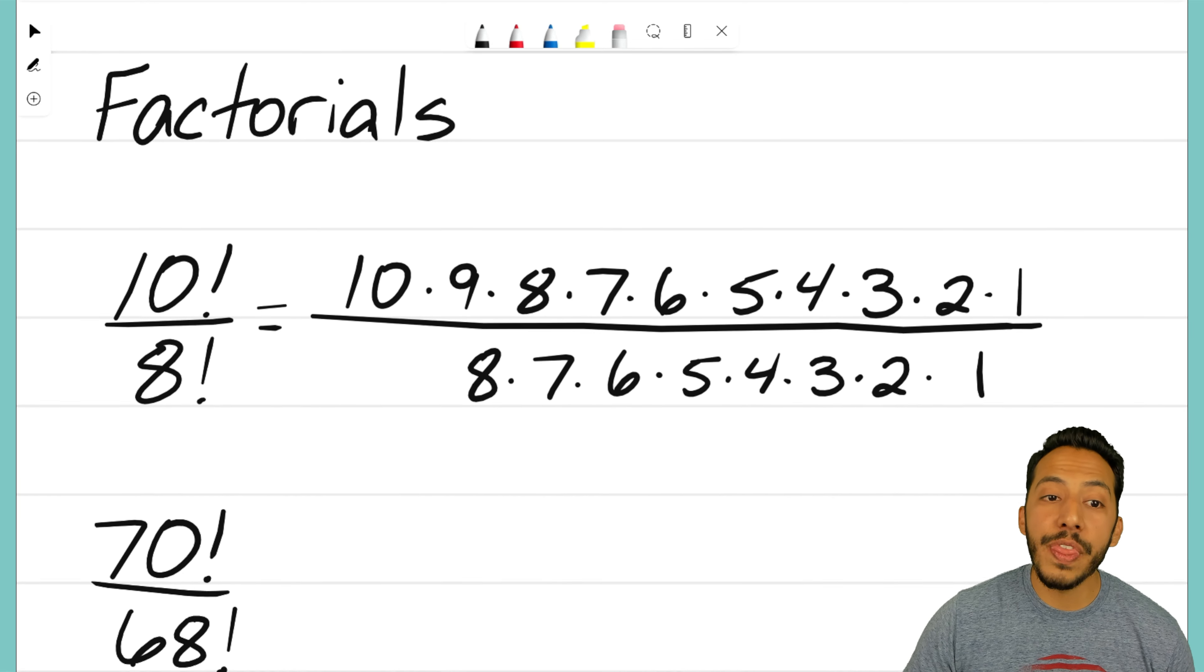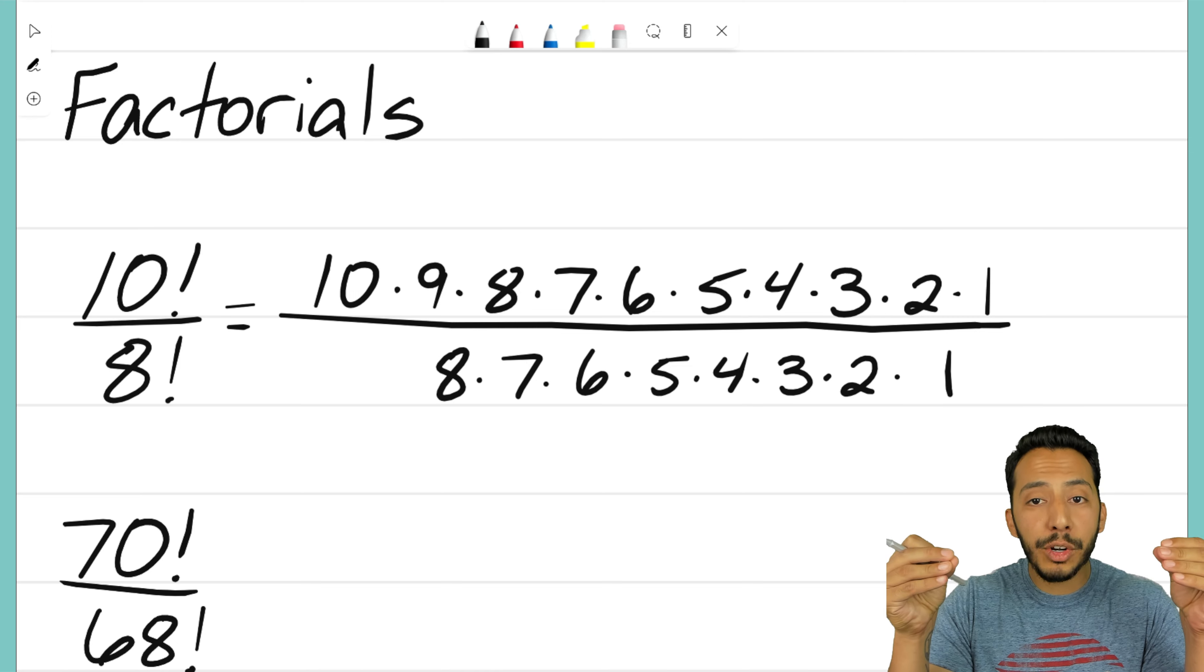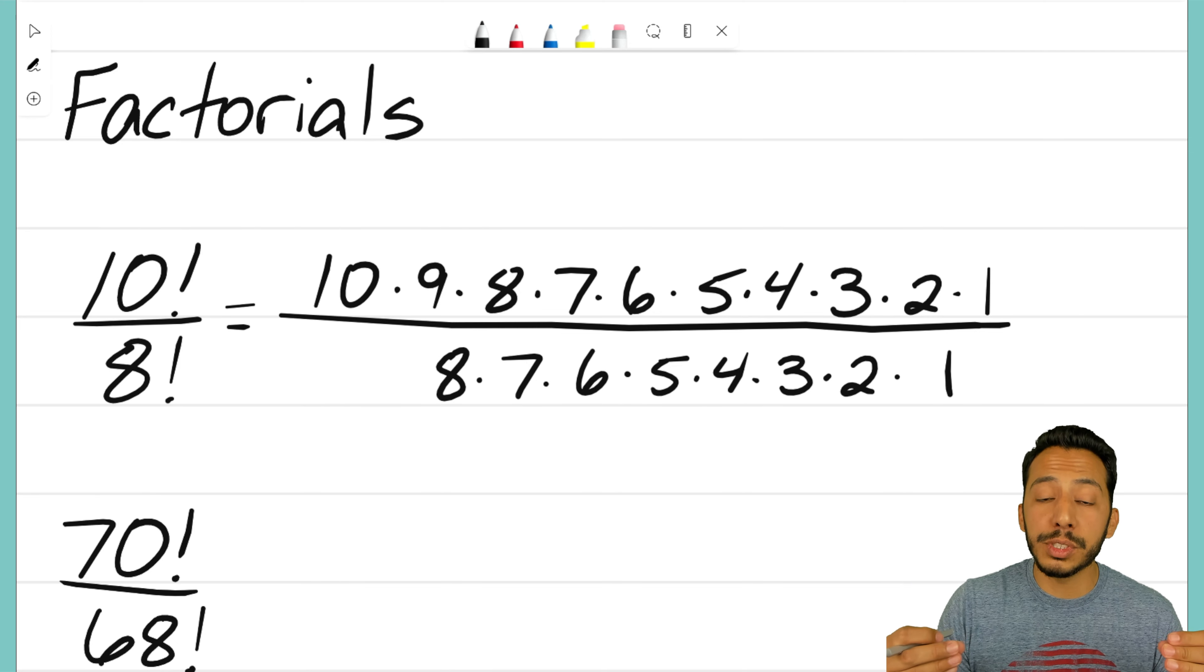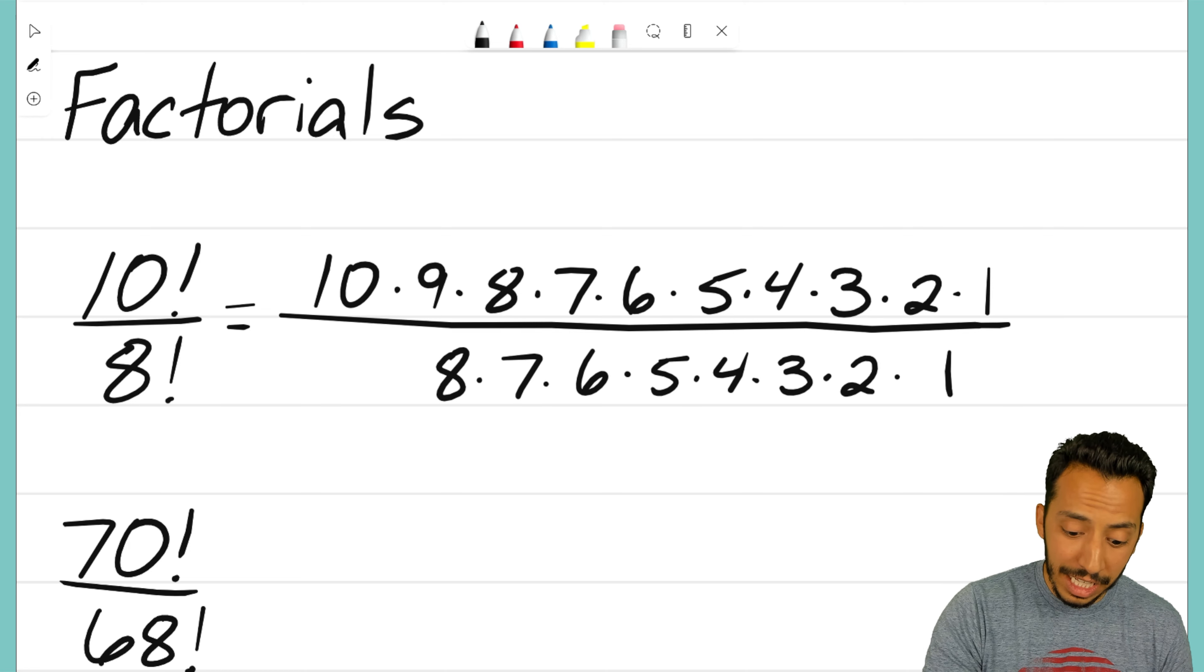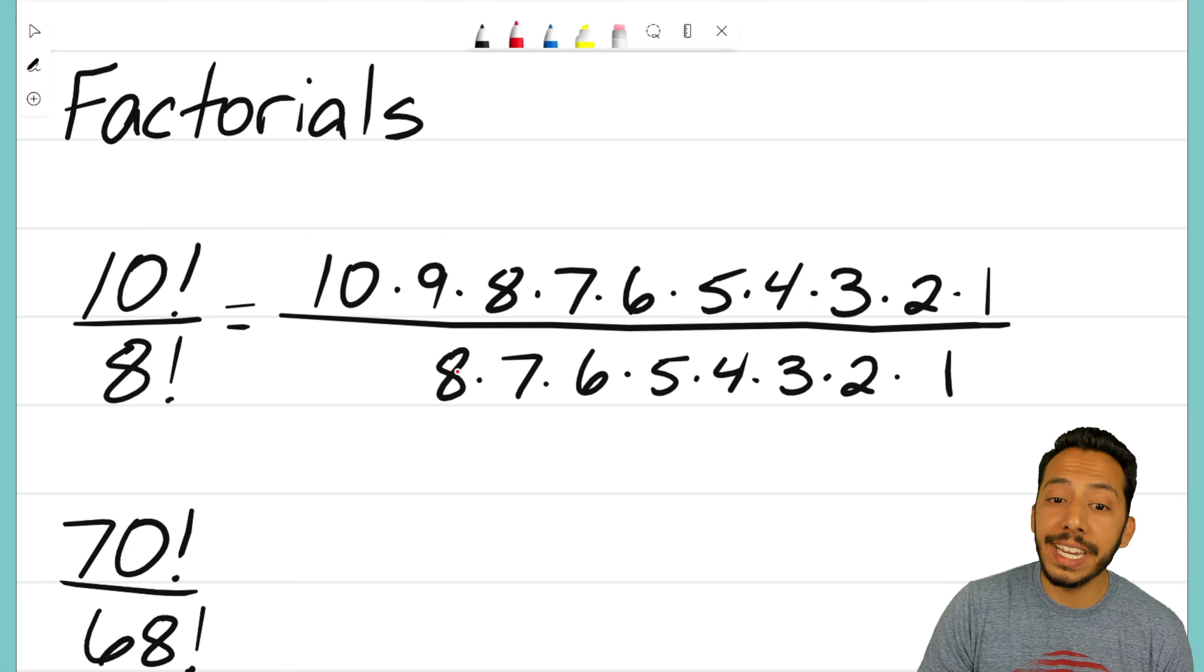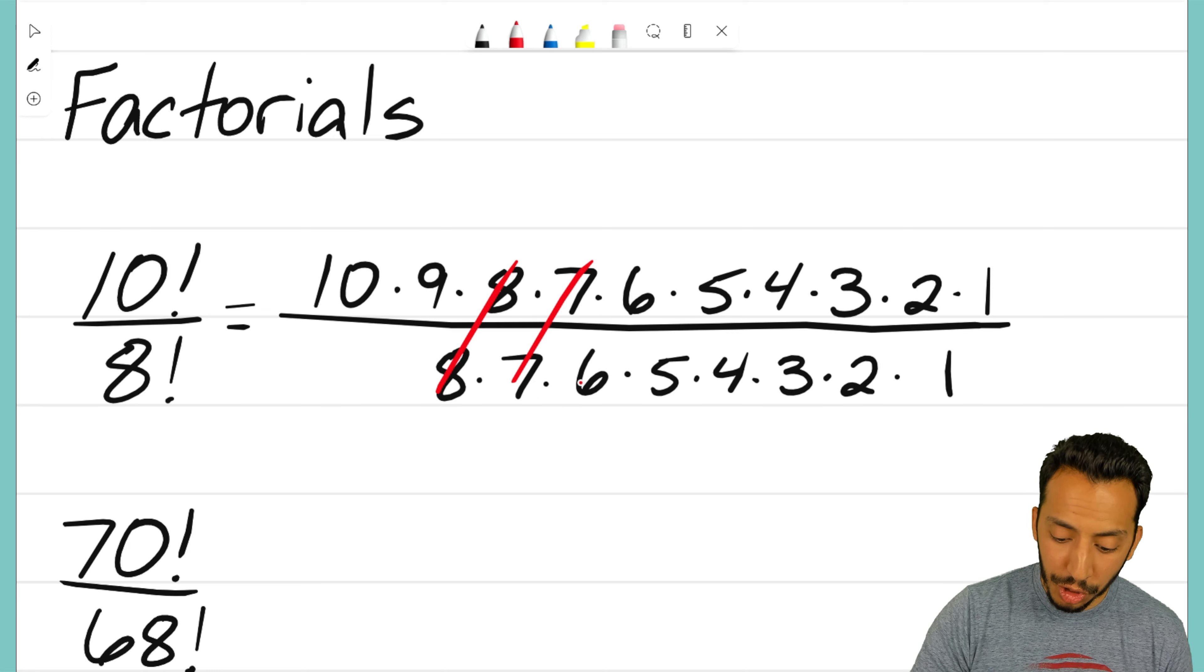So that is the problem we have—10 factorial over 8 factorial. Some of you might already know what's about to happen. I have my string of numbers on top multiplying, my string of numbers on the bottom multiplying. Whenever we have a fraction with numbers on top multiplying and numbers on bottom multiplying, we can cancel out any like terms. I see an 8 in the denominator and 8 in the numerator—those divide to make 1. The 7 divided by 7 makes 1.